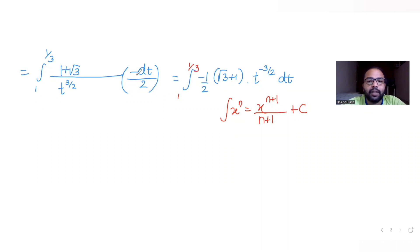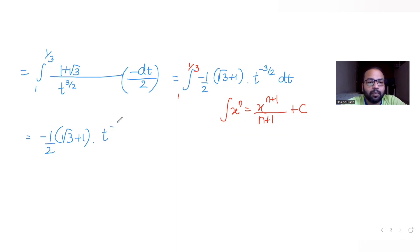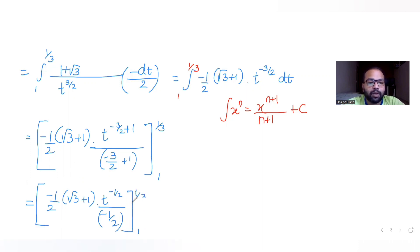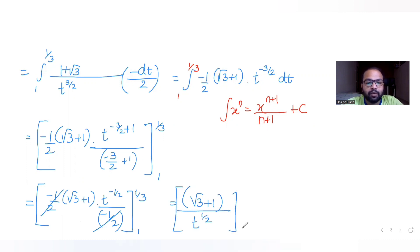Applying the power rule: t^(−3/2 + 1)/(−3/2 + 1) = t^(−1/2)/(−1/2). So the integral becomes −(1+√3)/2 times [t^(−1/2)/(−1/2)] from 1 to 1/3. The two minus signs cancel, leaving (1+√3) times [1/√t] from 1 to 1/3.